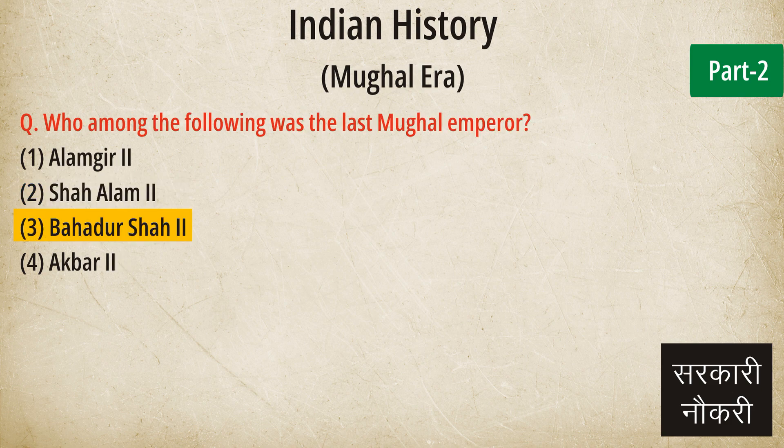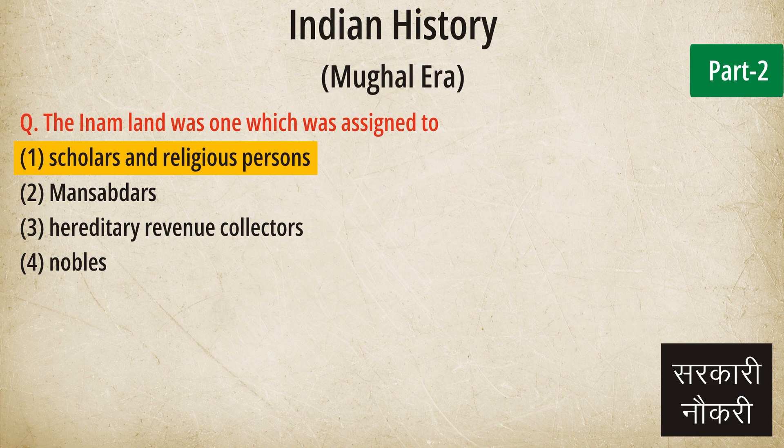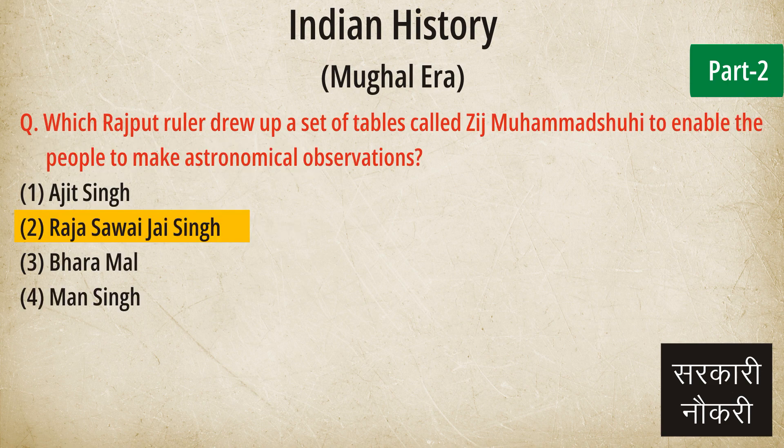Question: Who among the following was the last Mughal emperor? Answer: Bahadur Shah II. Question: The Inam land was one which was assigned to. Answer: Scholars and religious persons. Question: Which Rajput ruler drew up a set of tables called Zij Muhammad Shahi to enable the people to make astronomical observations? Answer: Raja Sawai Jai Singh.